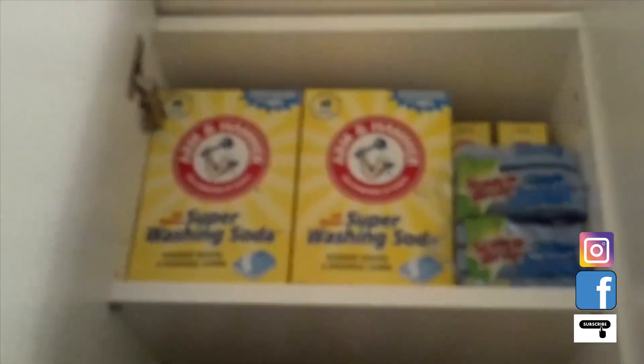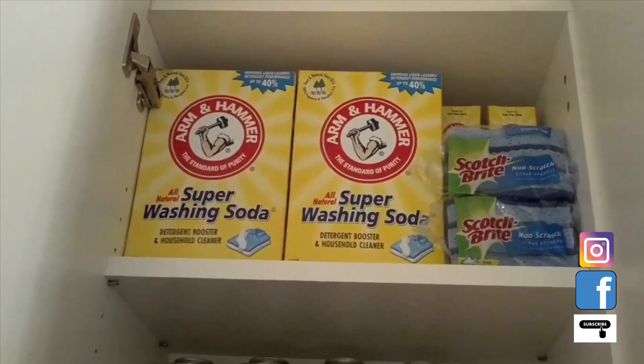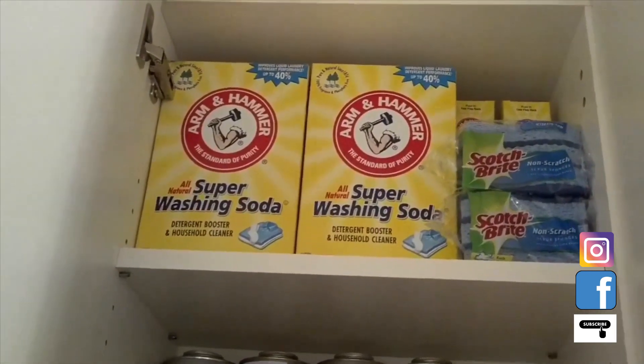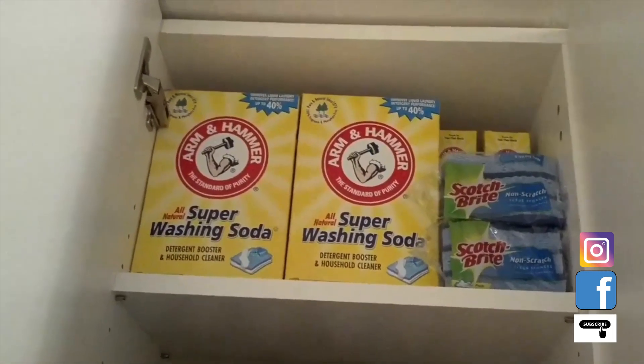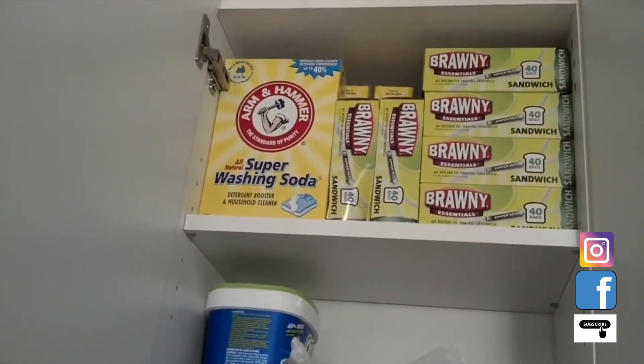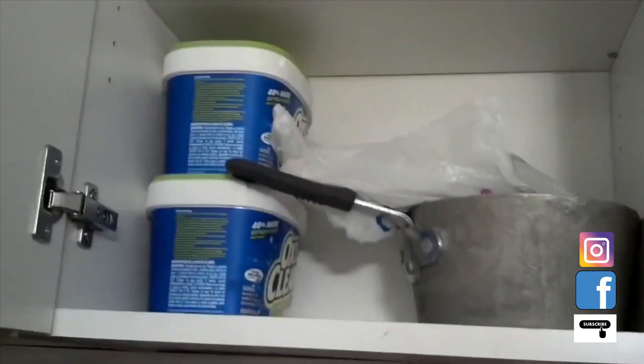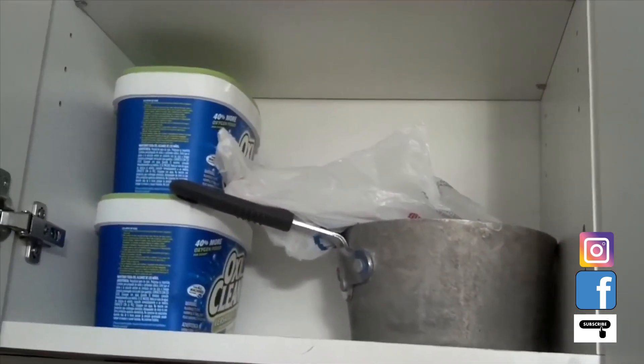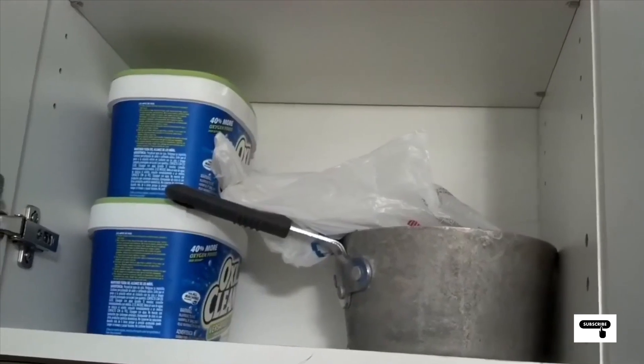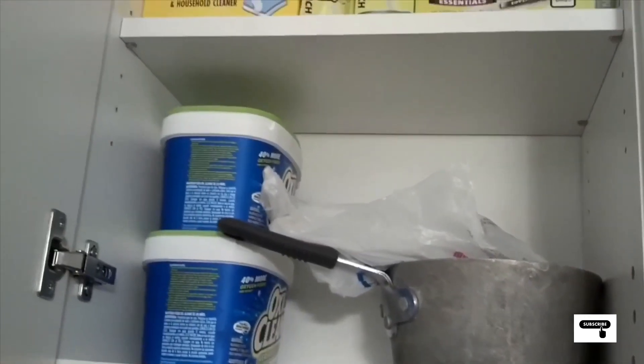Now over in this cabinet, I have more washing soda, and then I have some Scotch Brights. The reason why I have those stored up there is for my Berkey water filter, a way to clean the filters. And then coming over to this next cabinet, I have more washing soda, I have Ziploc baggies, and then I also have the OxyClean, also in my saucepan and a grater inside to make my own laundry detergent.